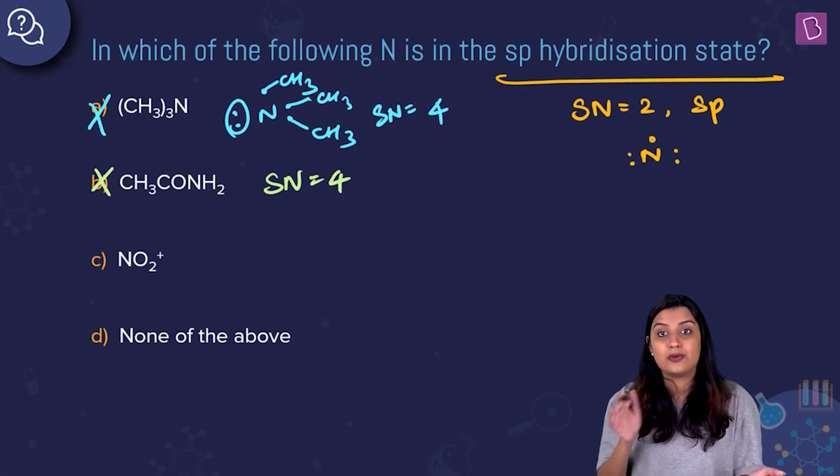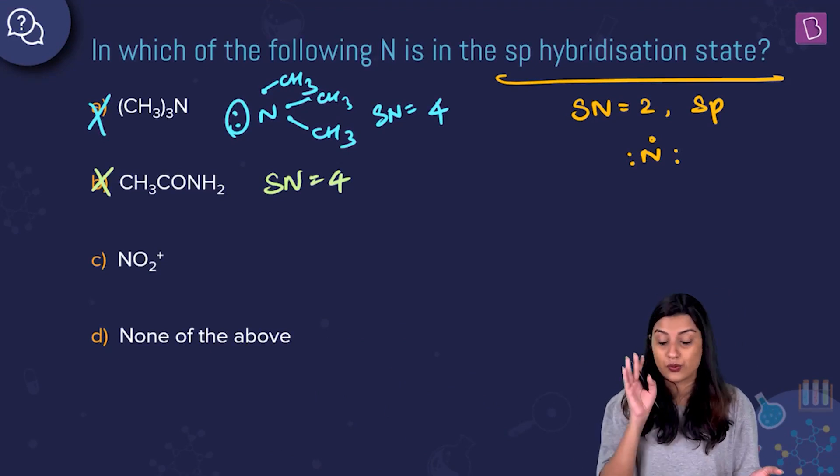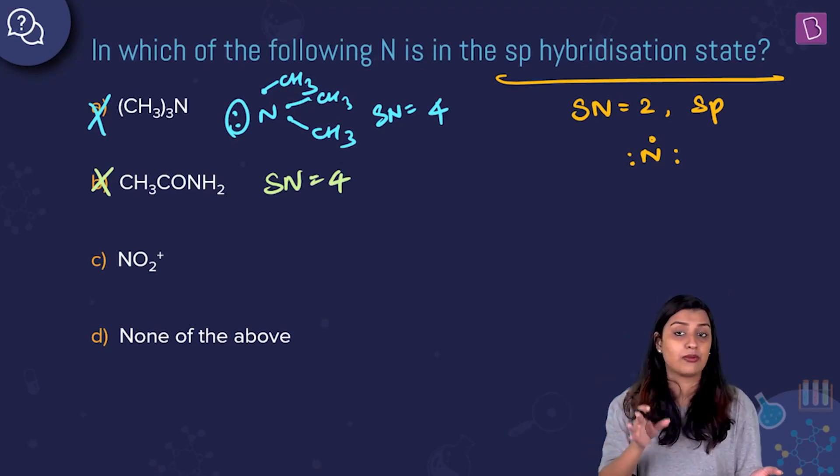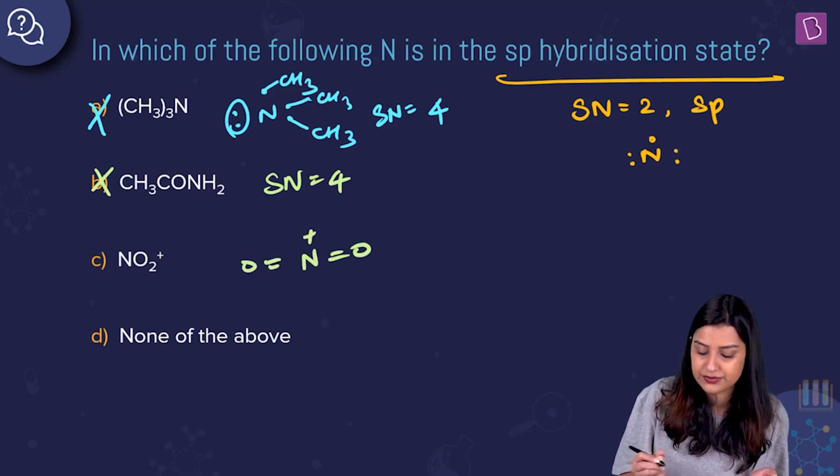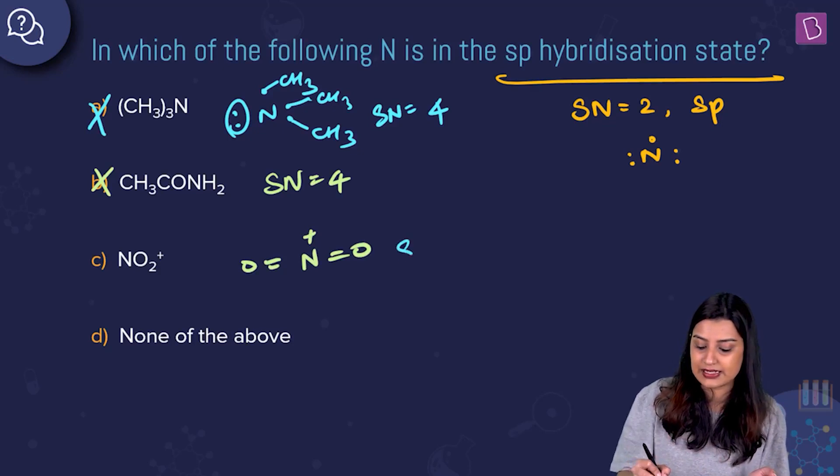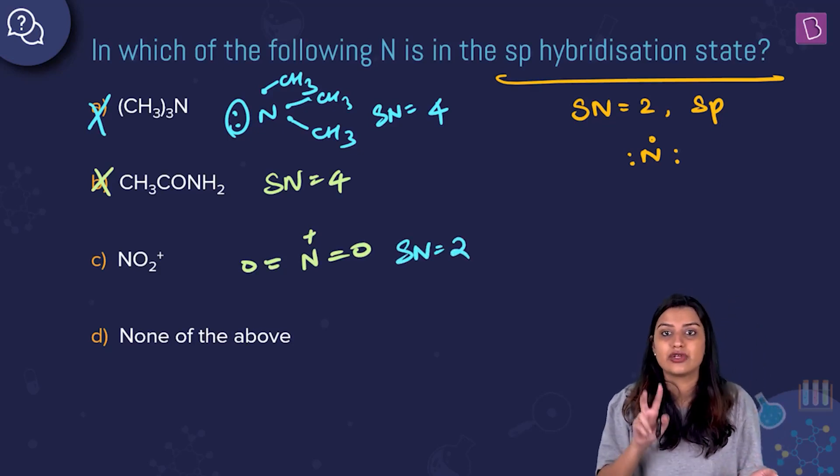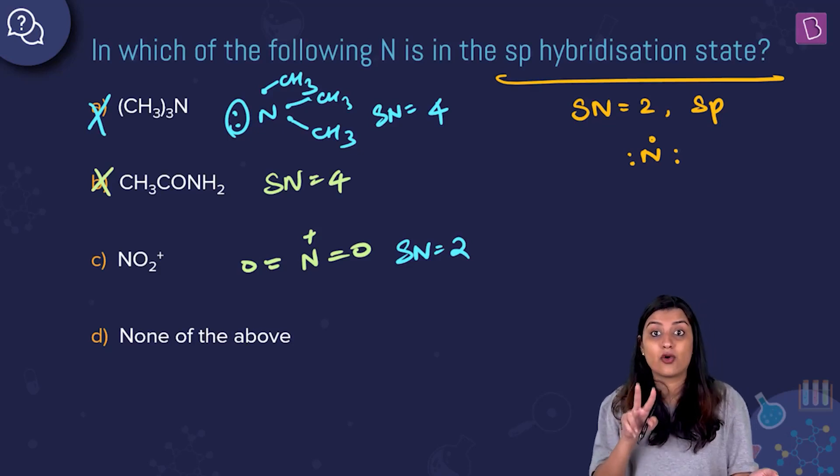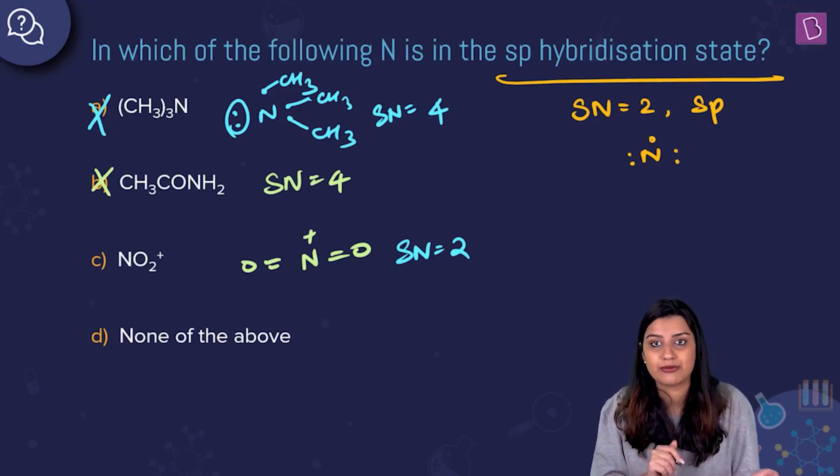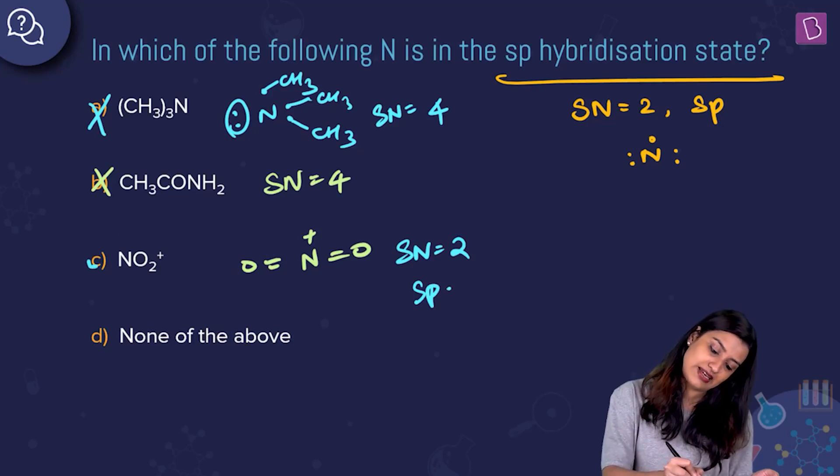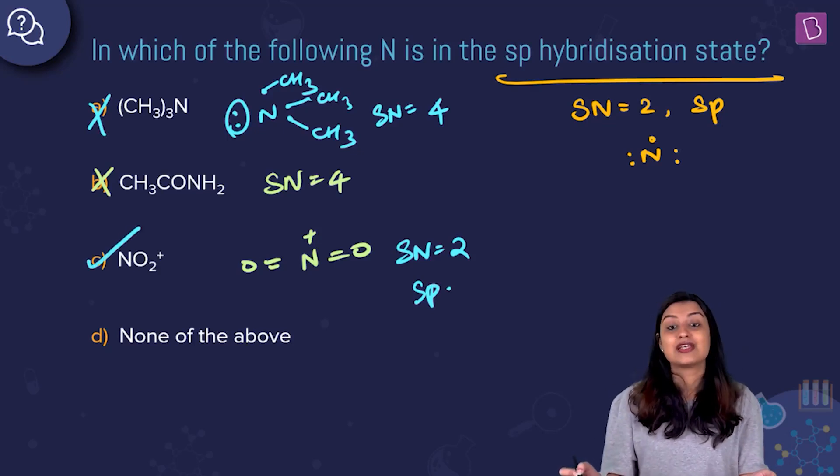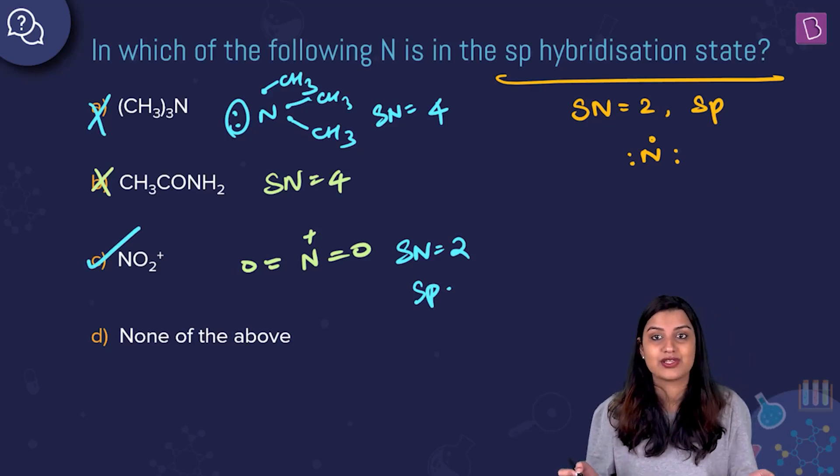Option C is NO2+. In case of NO2+, nitrogen does not start off with 5 electrons. It loses one electron. Now you're talking about N+ as the central atom, so you have 4 electrons available for bonding. Here the steric number is equal to 2 because you have only two bond pairs, two sigma bond pairs. You have pi bonds also, but we don't count that for hybridization. Steric number is 2, which means this is going to be sp hybridized. Option C, NO2+, is the right answer.